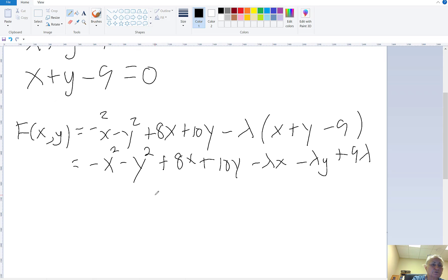In the next step we need to take the first order partial derivatives with respect to x, with respect to y, and with respect to lambda. So with respect to x, that means x is a variable, everything else is a constant. That's going to be minus 2x because that's the derivative of minus x squared. That's a constant, so that's a 0, plus 8. That's a constant, so that's a 0, minus lambda.